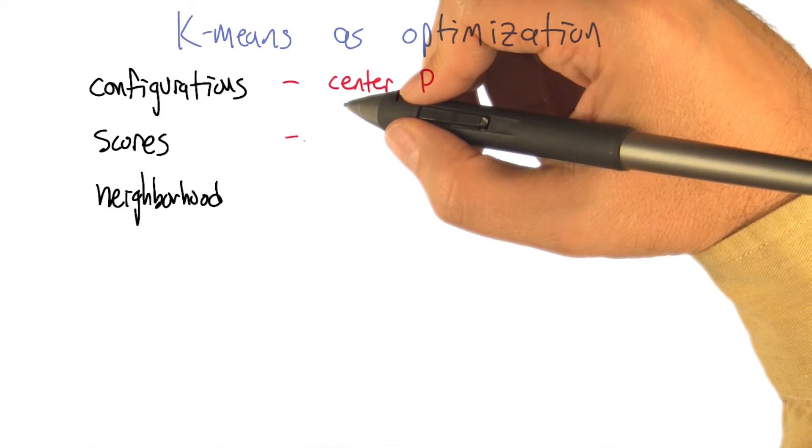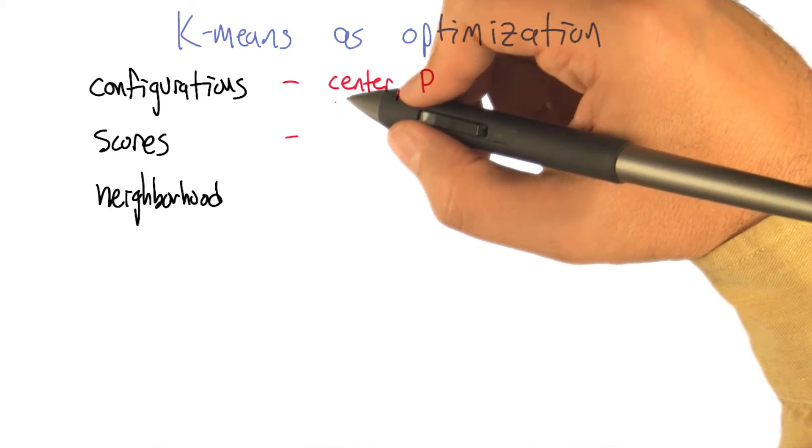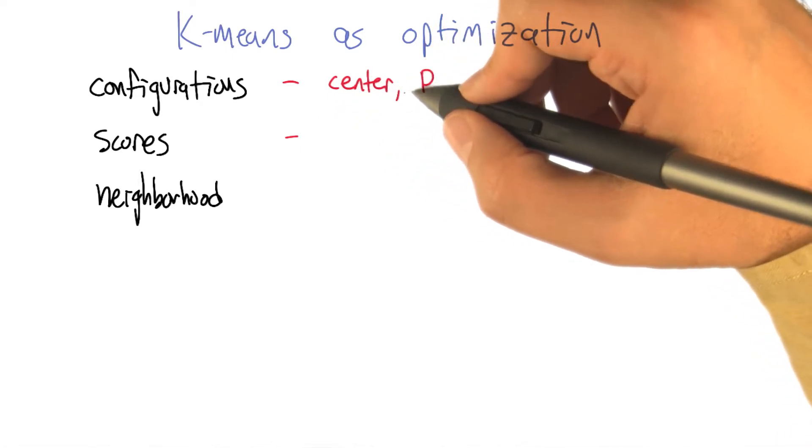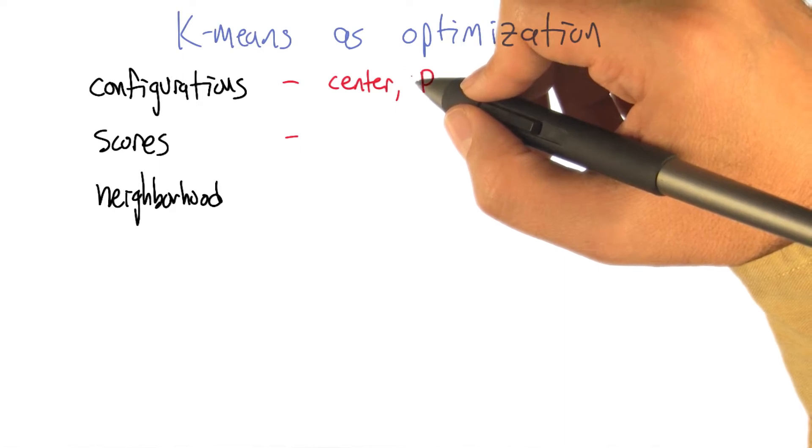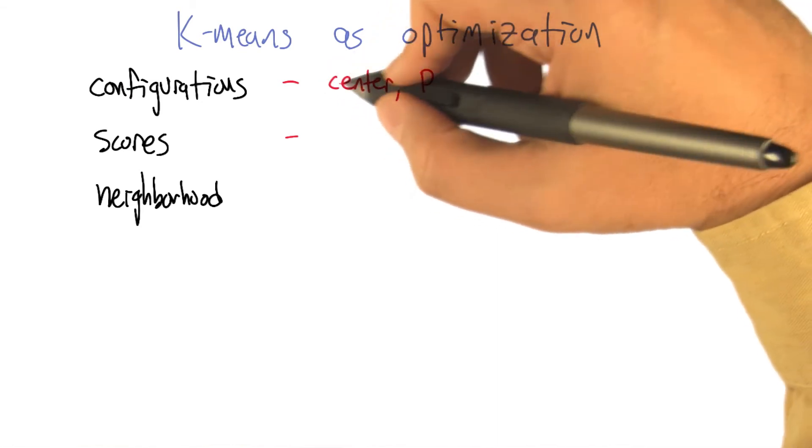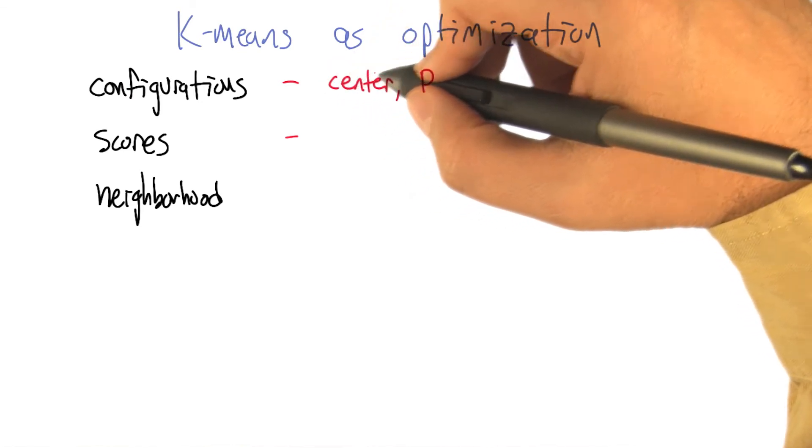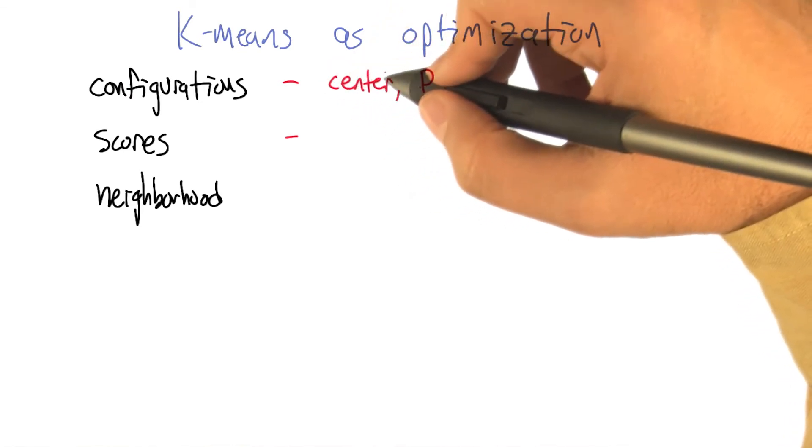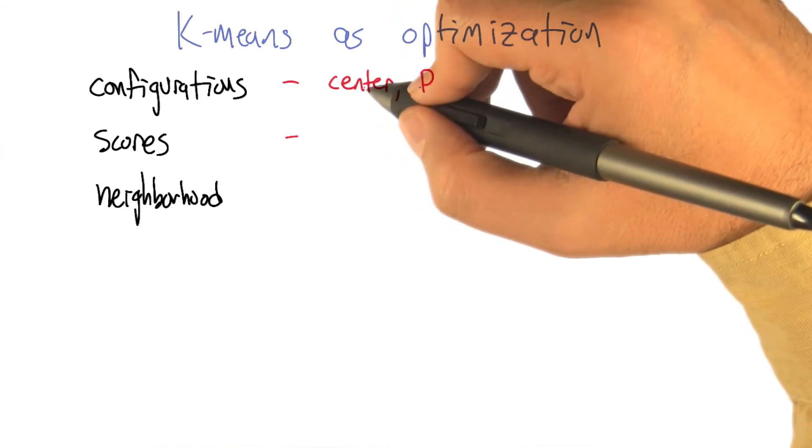So in this setting, the configuration, the thing that we're optimizing over, is the partitions, the clusters. And we also have this kind of auxiliary variable of where the centers are for those clusters. And what we need now is a notion of scores. How do we score a particular clustering? So do you have any thoughts about what would be a better or worse clustering according to the k-means algorithm?